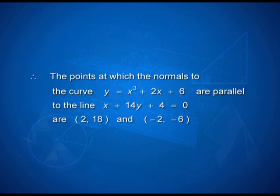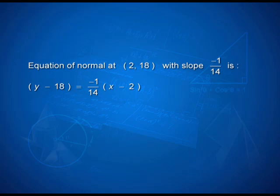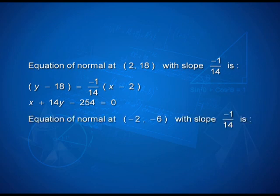I get two points at which the condition is satisfied: (2, 18) and (−2, −6). That is why the question asks for normals to the curve — there is a plural word here, so I need two normals, and I have two answers. The normal at (2, 18) with slope −1/14 turns out to be x + 14y − 254 = 0, and the second normal turns out to be x + 14y + 86 = 0.